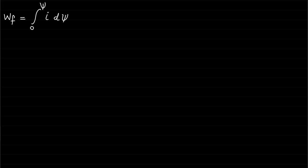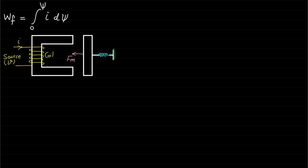It is obvious that the formula of WF is a very general expression. Let's apply this expression to our relay system to achieve a new formula for the field energy WF in terms of the magnetic circuit quantities or variables. To do that, we need to find expressions for the current I and the small change in magnetic field linkage dψ in terms of magnetic circuit variables.